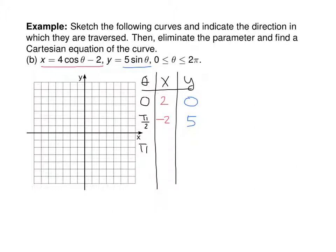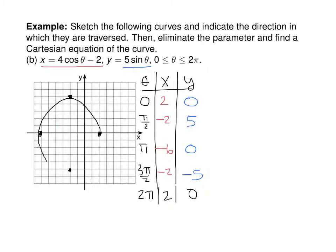At θ = 3π/2: cosine is 0, so x = −2, and y = −5. At θ = 2π we're back at (2, 0). Plotting (2,0), (−2, 5), (−6, 0), (−2, −5), and back to (2, 0) traces out something that looks like an ellipse traversed in that direction.